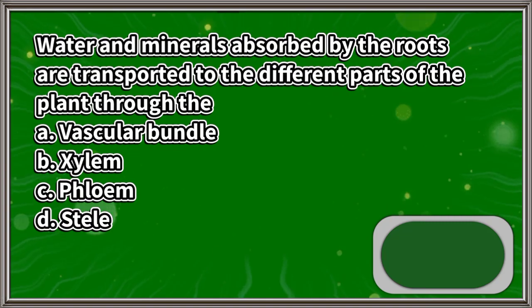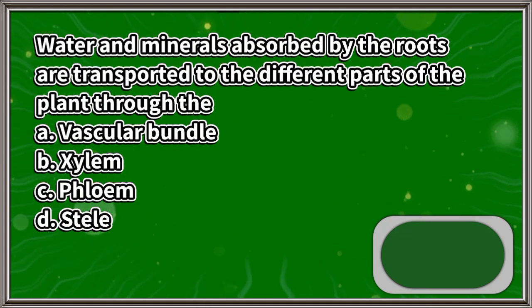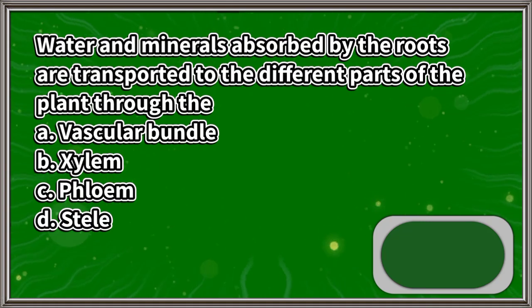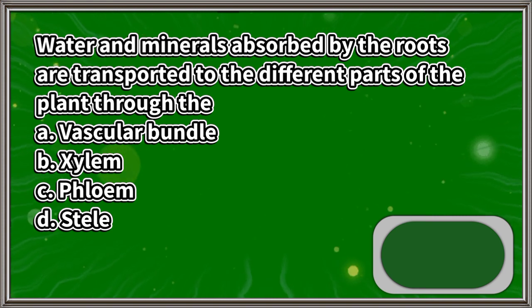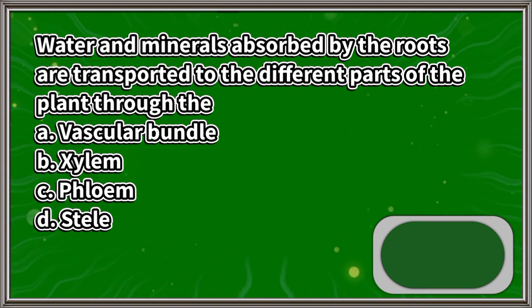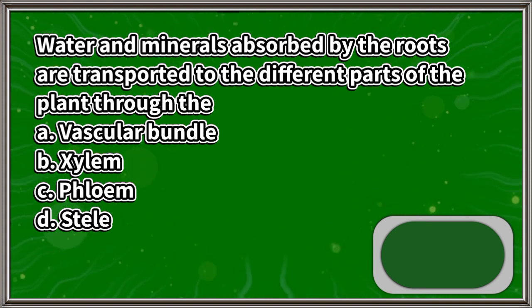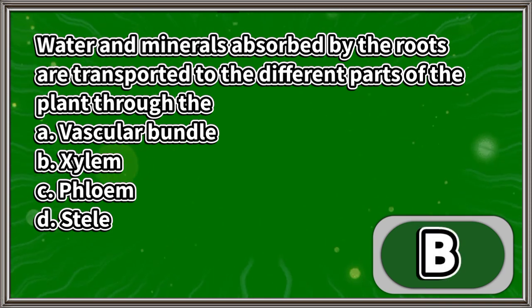Water and minerals absorbed by the roots are transported to the different parts of the plant through the: A. Vascular bundle, B. Xylem, C. Phloem, D. Stele. The answer is letter B.